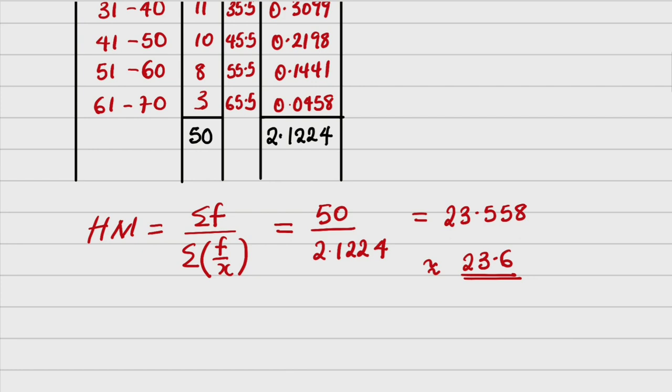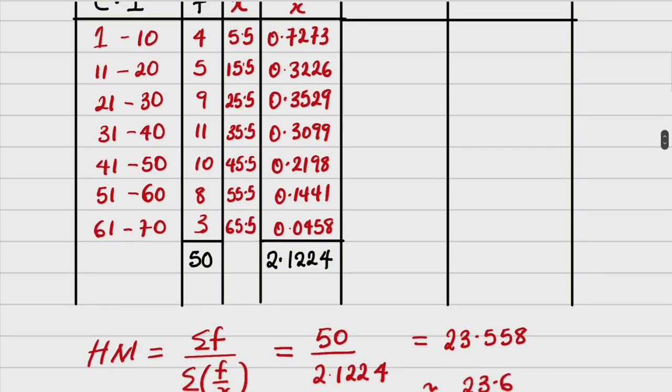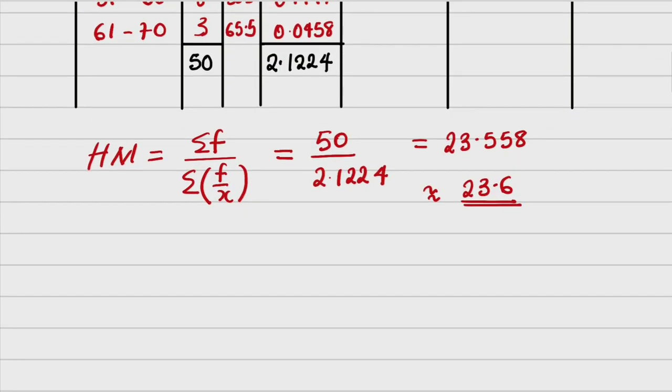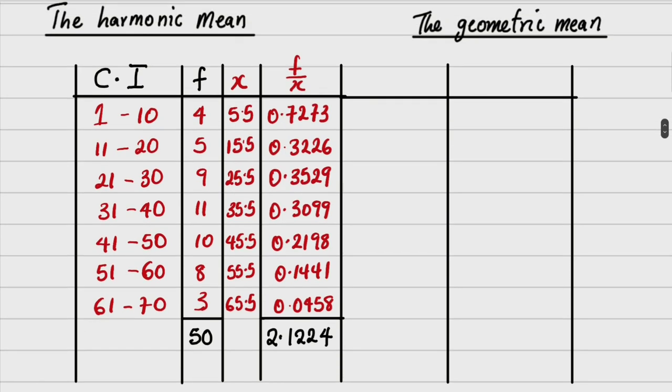This is how to find the harmonic mean of a grouped data. Then we move to find the geometric mean. To find the geometric mean, I'm going to use the same table because the formula is simple and contains some of the things we use in harmonic mean. Geometric mean, having abbreviation GM, equals the antilog of summation f into log of x over summation f. From this formula, you agree with me that we need the column for log of x and the column for f into log x.